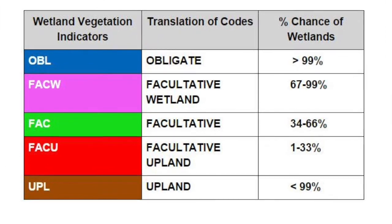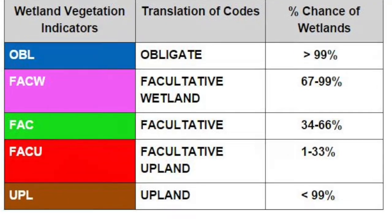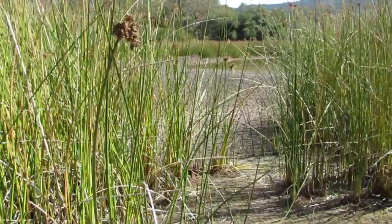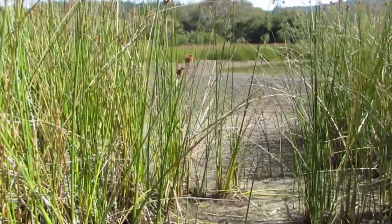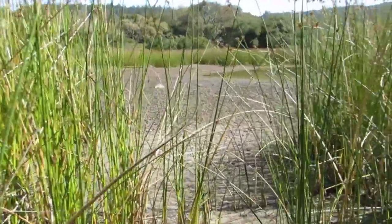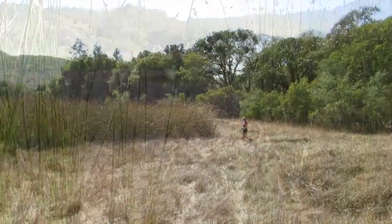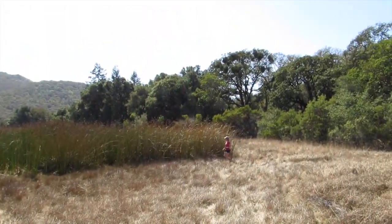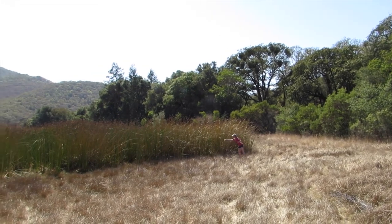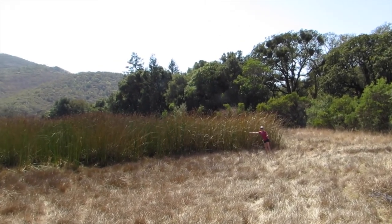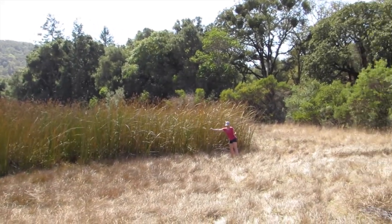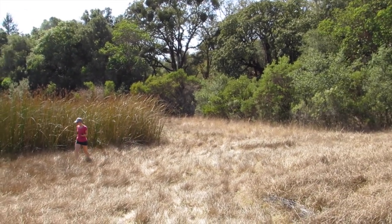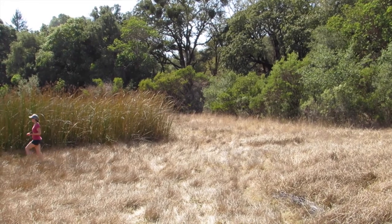Wetland vegetation is only one of three parameters used in wetland determinations according to the U.S. Army Corps of Engineers protocol. Wetland hydrology and hydric soils are the other two. Wetlands qualify as jurisdictional by the state of California if only one of these factors is found.